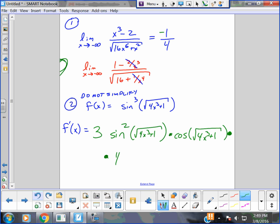So it's one half 4x cubed plus 1 to the negative half. Then what do I have to do? I've got to take the derivative of the inside. How about 12x squared? And that is the derivative of that function.